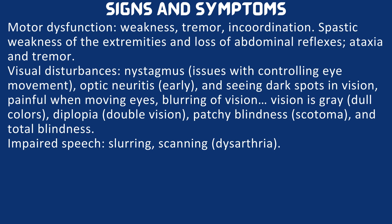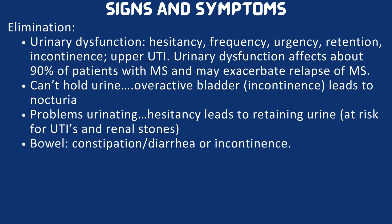The patient will have impaired speech — slurring and scanning — known as dysarthria. Elimination issues include urinary dysfunction such as hesitancy, frequency, urgency, retention, and incontinence. Some patients will have urinary tract infections. Urinary dysfunction affects about 90% of patients with multiple sclerosis and may exacerbate relapse. Patients can't hold urine due to overactive bladder, leading to nocturia. Difficulty urinating with retention puts patients at risk for UTIs and renal stones. Some patients will also have bowel problems such as constipation, diarrhea, or incontinence.